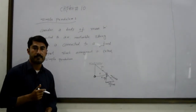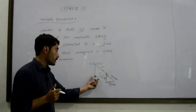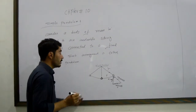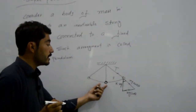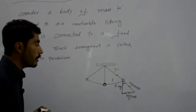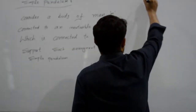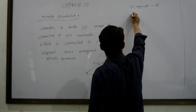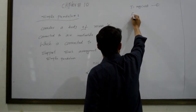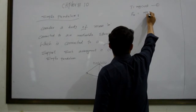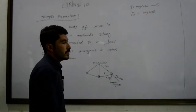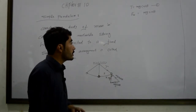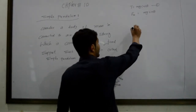At the mean position, inertia causes the body to overshoot and continue to the other extreme position. The restoring force always brings the body back toward the mean position. From the extreme position it returns again toward mean position — this continuous back and forth motion is simple harmonic motion. The tension in the string and mg cos theta cancel each other.